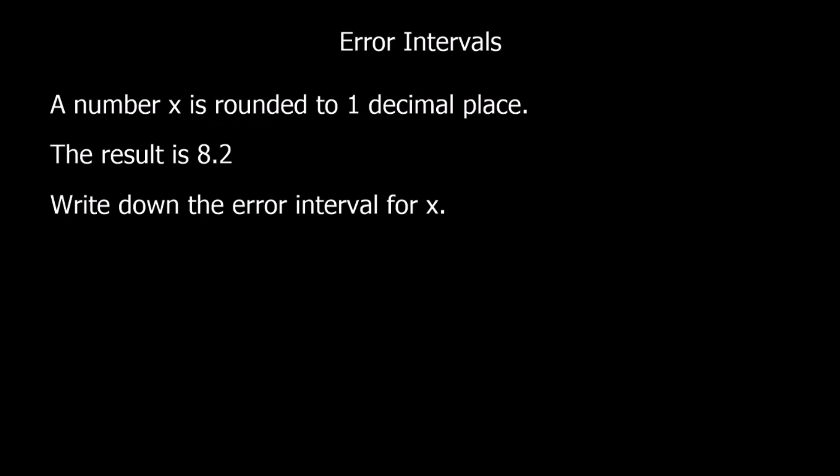In this video, we're going to look at error intervals. In these questions, we're going to look at numbers that have been rounded, and we want to know what they could have been before they were rounded. So here we've got a question: a number x is rounded to one decimal place. The result is 8.2. Write down the error interval for x.